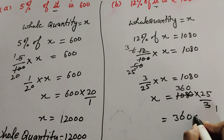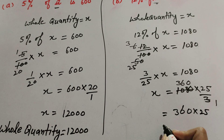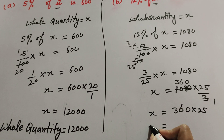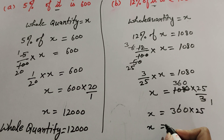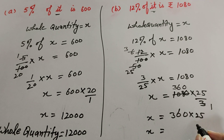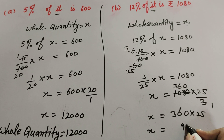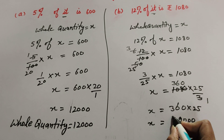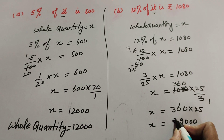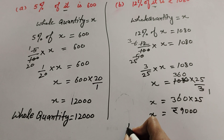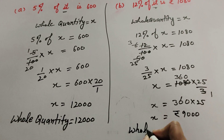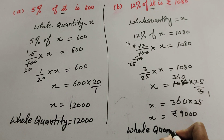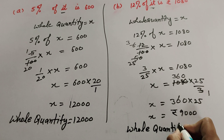So 360 multiplied by 25 equals 9,000. The whole quantity is 9,000 rupees.